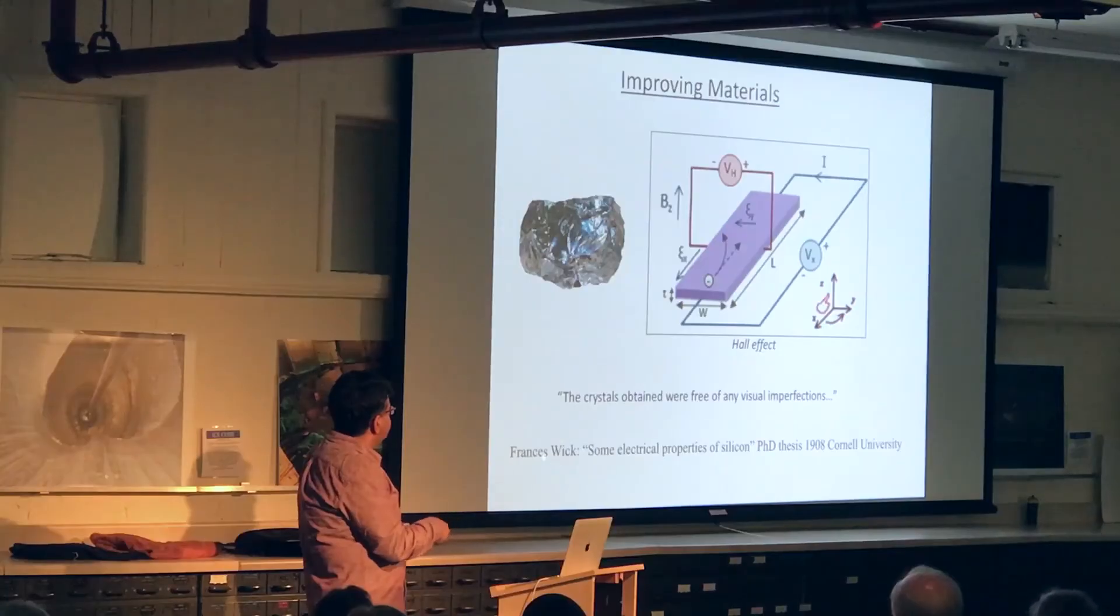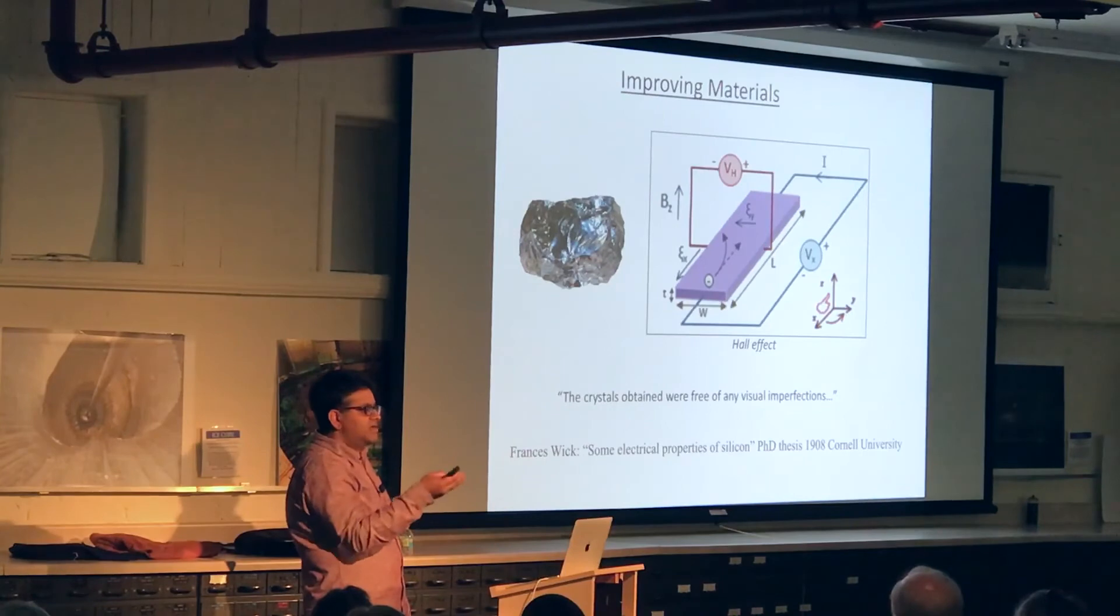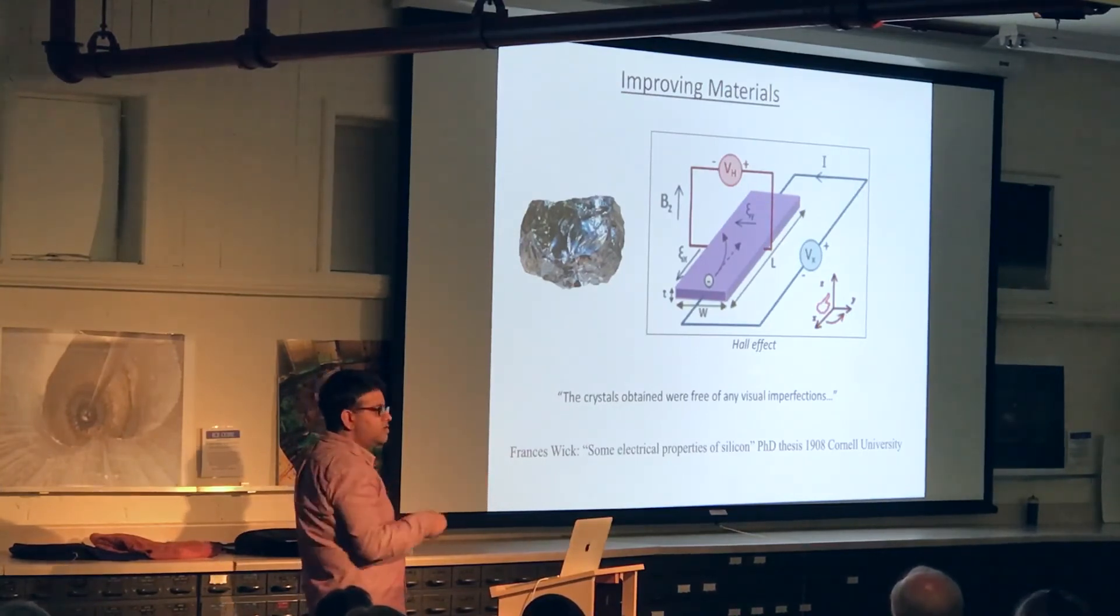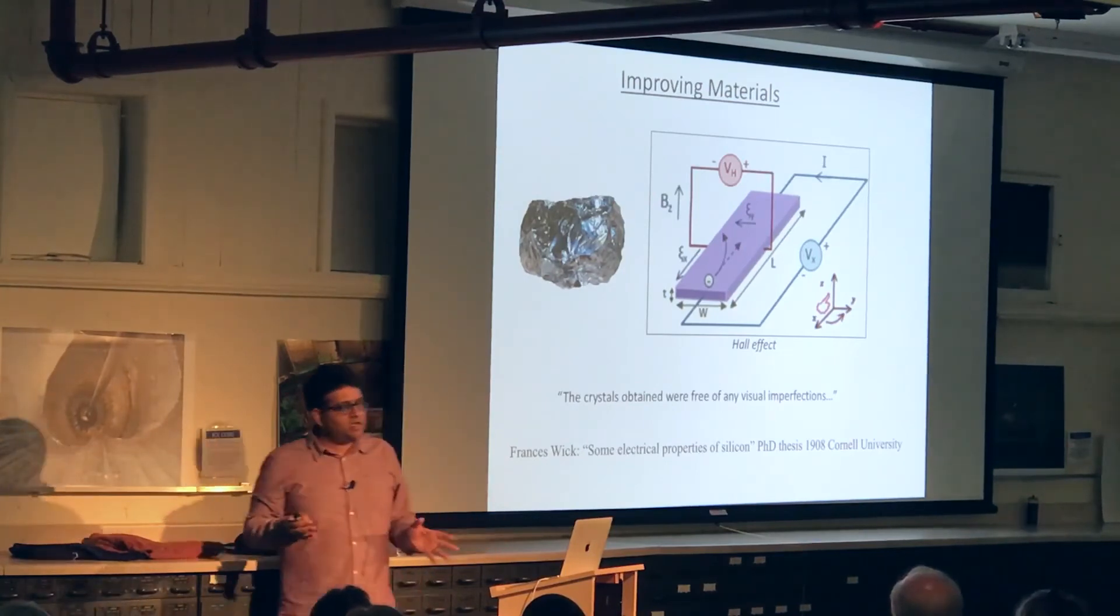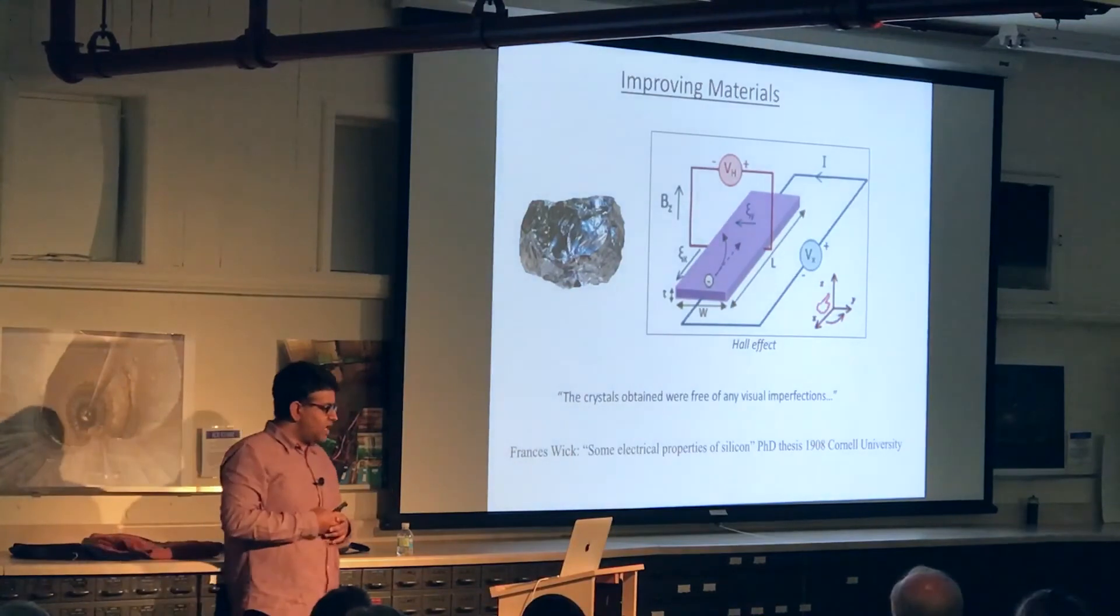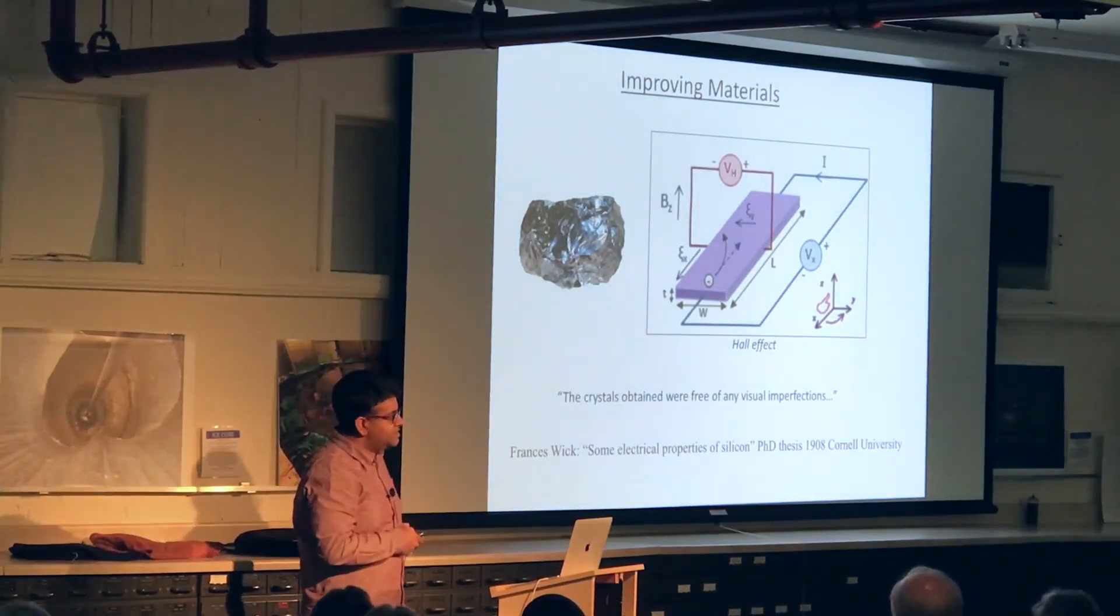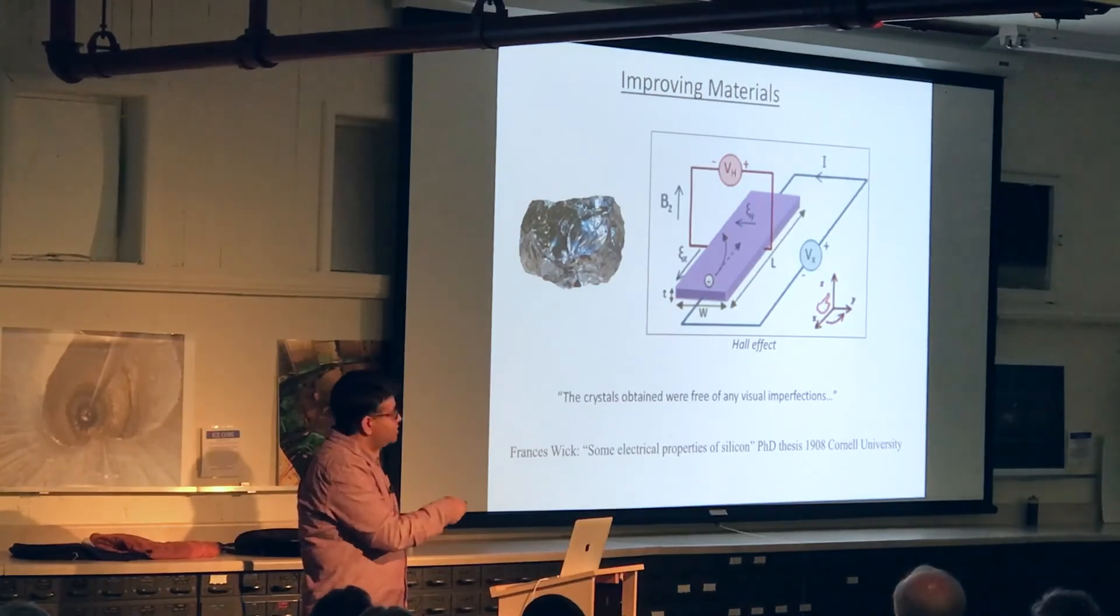Now the key thing that Miss Wick realized was that every single defect that there was in silicon, you had one extra electron. So by doing this experiment, by measuring the Hall voltage, she could actually tell how many defects there were in silicon. And I read this and I said wow, this is wonderful. So she looked at the silicon, she couldn't tell how good or bad the silicon was. And she came up with this experiment and then she actually could measure how many defects there were.